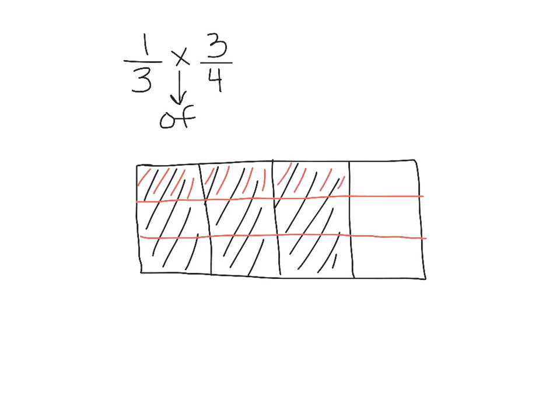When we take a look at our model, there are three pieces that overlap, so our numerator is three. And in one whole, we created twelve pieces, so twelve is our denominator. Again, we want to make sure we are writing our answer in simplest form, so we're going to take a look at the factors of three and twelve and see if we can simplify three twelfths.